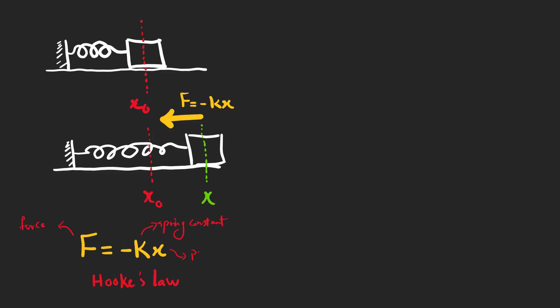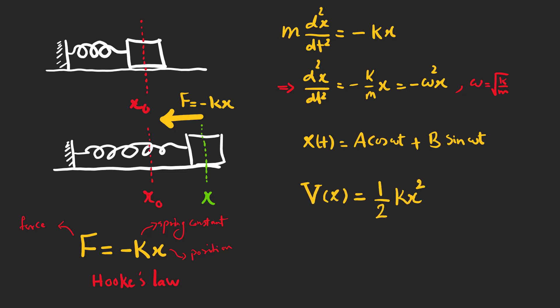This equation is called Hooke's Law. To solve this equation, we define omega as the square root of k over m, and the answer is a linear combination of sine and cosine. The potential energy around x0 is equal to kx squared over 2 and can be written like this.